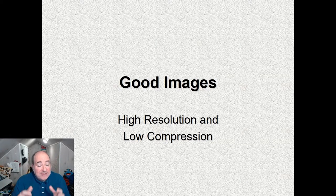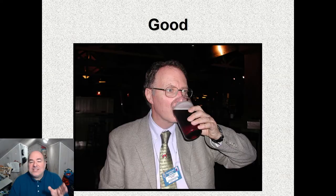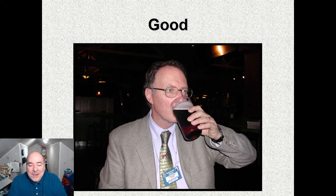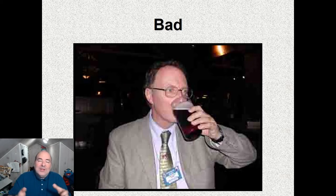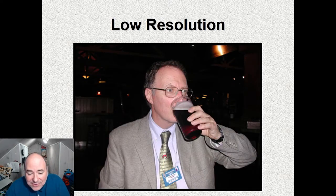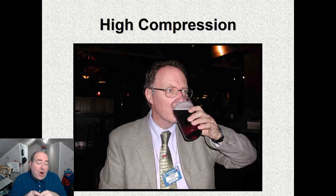Good images are high resolution and low compression. This is a good image — this is my friend Dermot. We are in Ireland, that is Guinness. This is a bad version of the same image — low resolution and highly compressed. A low-resolution image is very fuzzy, you can't read his name tag. A highly compressed image has digital worry lines on it. It's good to think about your image sources and what kind of quality you're dealing with.